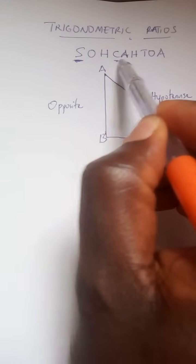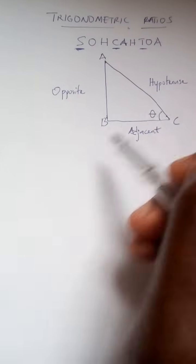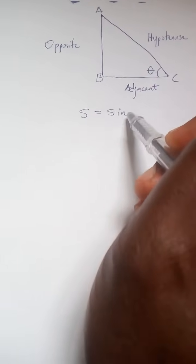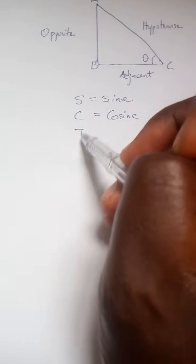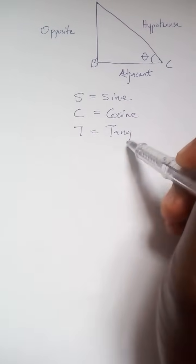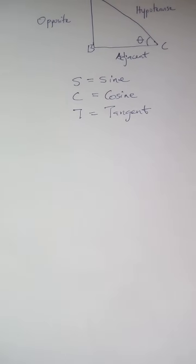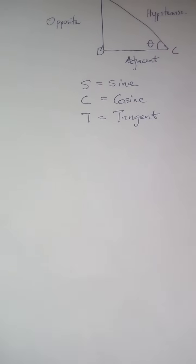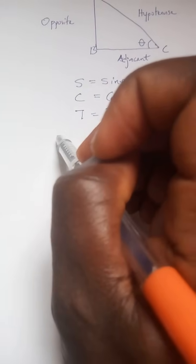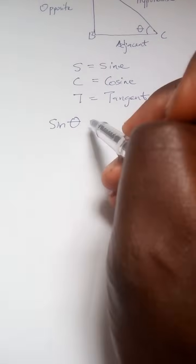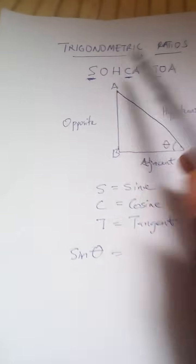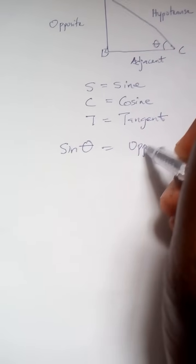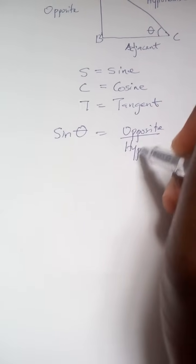According to the trigonometric ratio SOHCAHTOA, the keywords are S, C, and T. S stands for sine. When you're told to find the sine of theta, look at SOHCAHTOA: sine theta will be opposite over hypotenuse — so write opposite over hypotenuse.